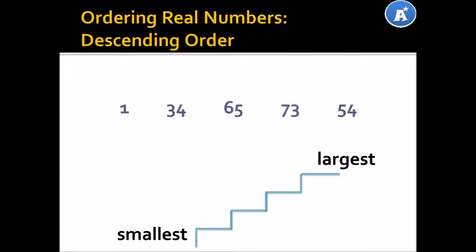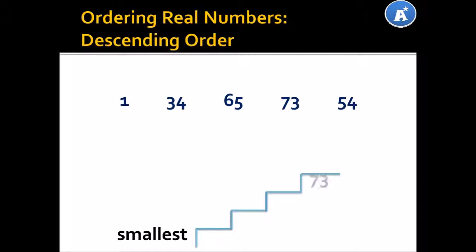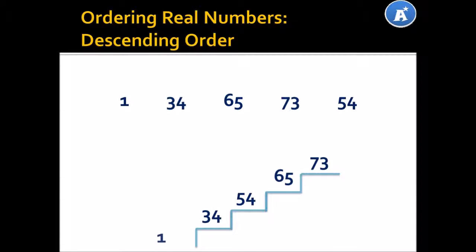Let's look at an example. We have 1, 34, 65, 73 and 54. Now, to place these numbers in descending order, you start with your largest number. In this case, our largest number is 73. Then we follow with 65, then 54, 34 and finally 1. You did a pretty good job.